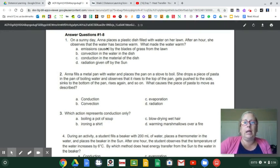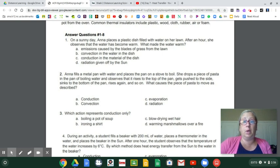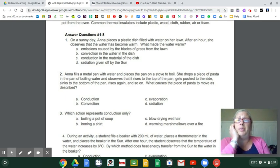Number one, on a sunny day, Anna places a plastic dish filled with water on her lawn. After an hour, she observes that the water has become warm. What made the water warm? Well, she put it on her lawn and it was uncovered. It was a sunny day. So I think that the thermal energy, the radiation from the sun, probably started to heat up the water. So I'm predicting this. I didn't look at the choices, you'll note.